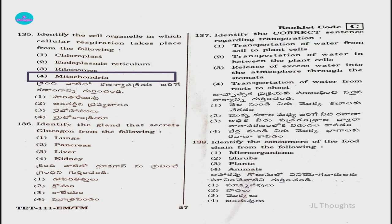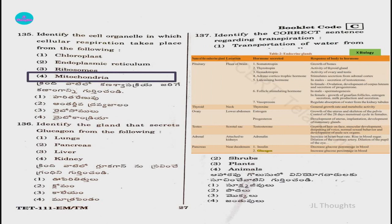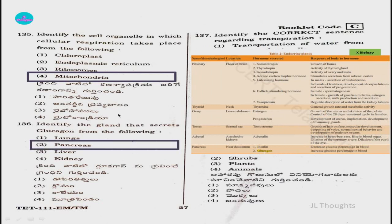Question number 136: Identify the gland that secretes glucagon. Options: lungs, pancreas, liver, or kidney. This is given in the class 10 biology book. Glucagon is secreted by the pancreas. So the answer is option two, pancreas.